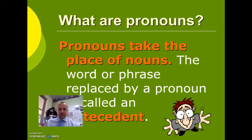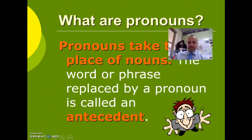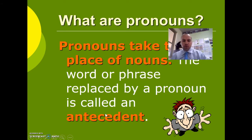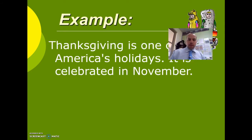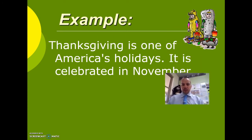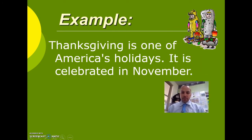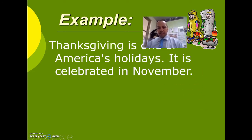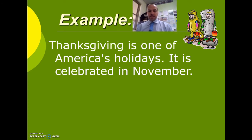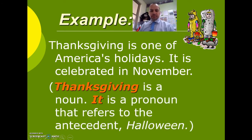The word or phrase replaced by a pronoun is called an antecedent. For example: 'Thanksgiving is one of America's holidays. It is celebrated in November.' Can you spot the pronoun in these two sentences? Thanksgiving is a noun, and 'it' is a pronoun that refers to the antecedent.